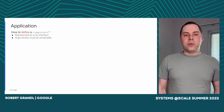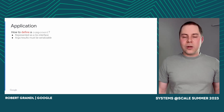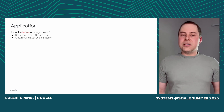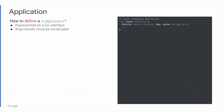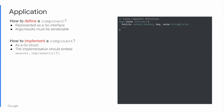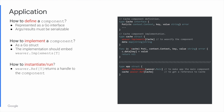Now let's see how the developer writes a ServiceWeaver application. The core concept is something called a component, where you structure your application around components that interact with each other. A component is represented as a Go interface where the arguments and results must be serializable. For example, you write a cache component which is simply a Go interface with a Put method. To implement a component, you write a Go struct and add a Weaver.Implements embedding so the ServiceWeaver runtime can identify it. To instantiate it, you add a Weaver.Ref embedding and call Weaver.Run in your main function — and that's it.